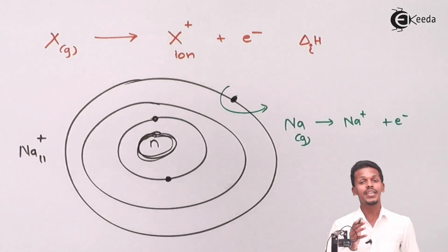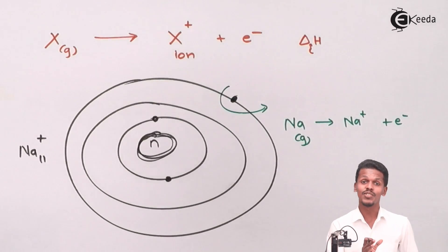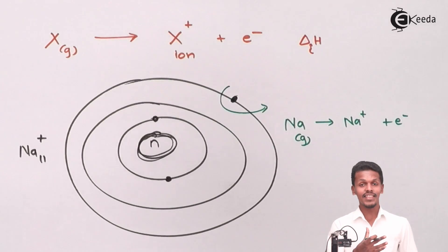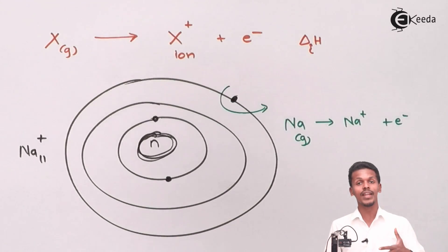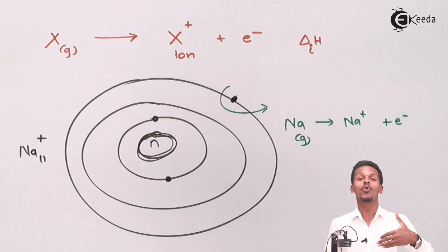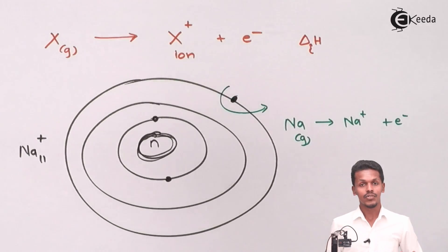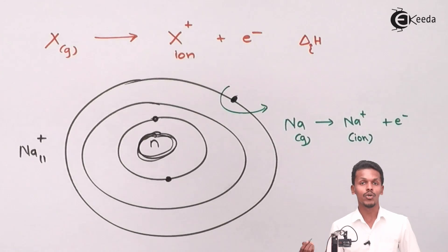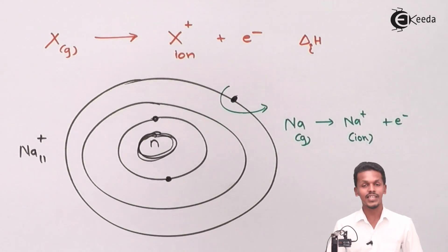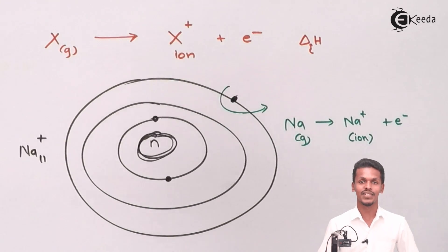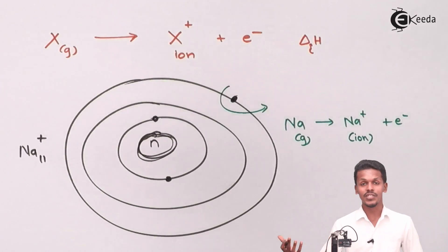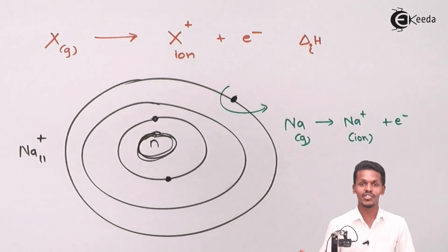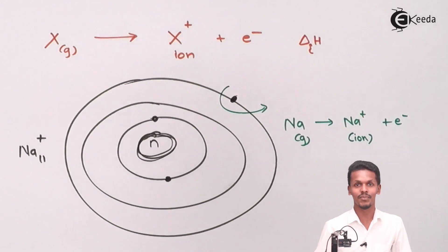We have converted an atom into a positive ion. Ionization enthalpy is only related to the conversion of an atom into an ion, or the conversion of an ion into a more positive ion. This process is known as ionization, and the energy required to remove the electron is known as ionization enthalpy.